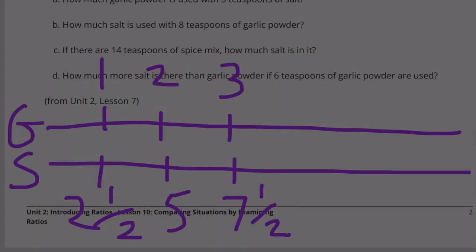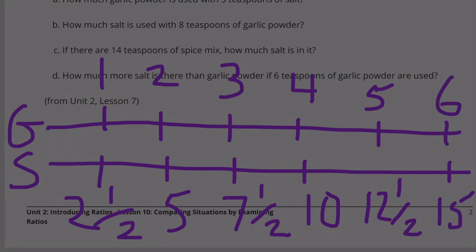5 to 12.5. 6 to 15. For every 6 teaspoons of garlic powder, there are 15 teaspoons of salt.